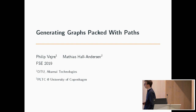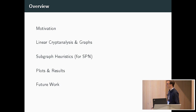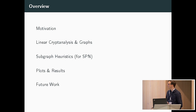This talk is a joint work between Philip Werner and Matthias Hall-Anderson, and Matthias will give the talk. The talk is divided into five sections: motivation and folklore about linear cryptanalysis, rephrasing linear cryptanalysis as graph problems, heuristics for finding good sub-graphs and why this is of interest for SPNs, plots and results, and finally some computer work.